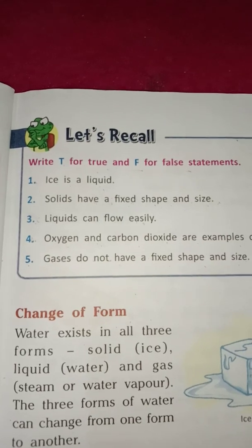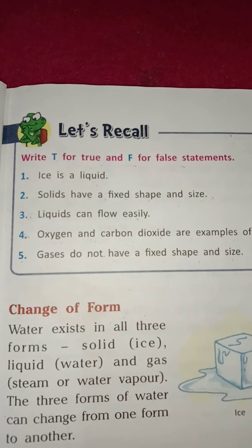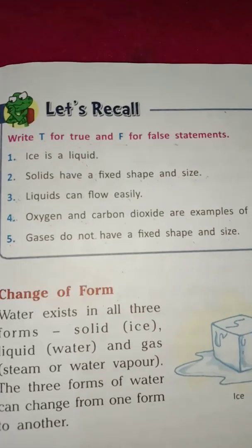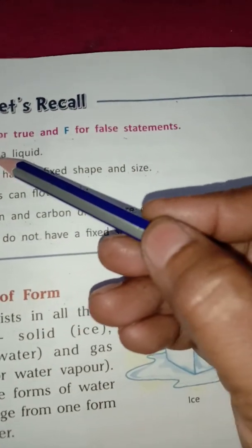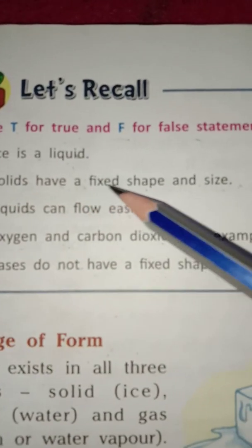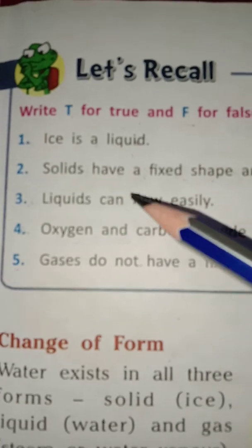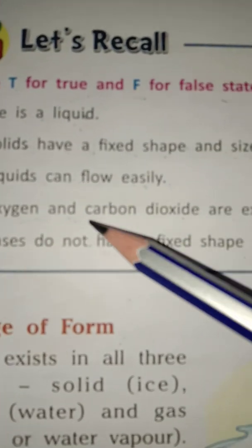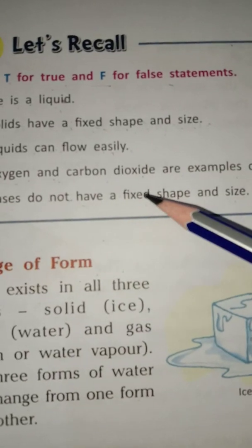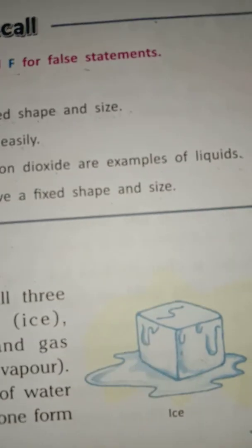Listen properly — I am retelling you all the answers. First: ice is a liquid — this is false. Second: solids have a fixed shape and size — this is true. Third: liquids can flow easily — this is true. Fourth: oxygen and carbon dioxide are examples of liquids — this is false. Fifth: gases do not have a fixed shape and size — this is true.